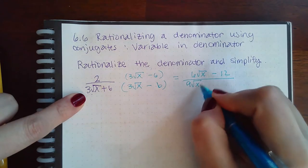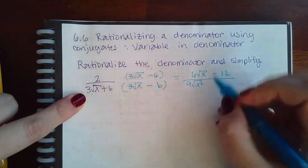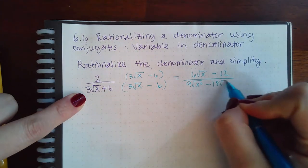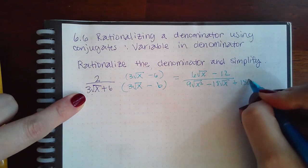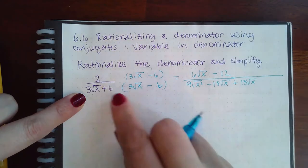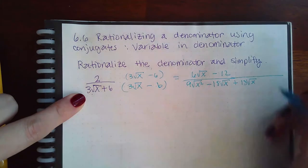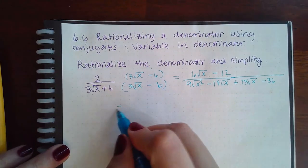is 9√x squared, this times this is negative 18√x, this times this is positive 18√x, and then positive 6 times negative 6 is negative 36. So we end up with 6√x minus 12 over 9x